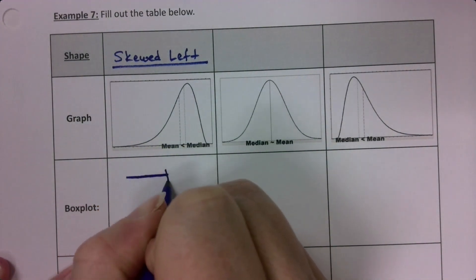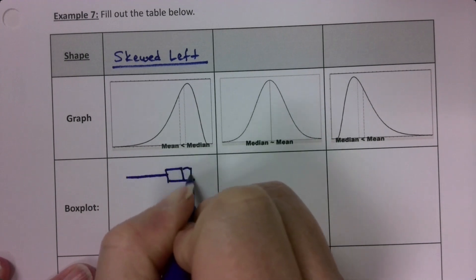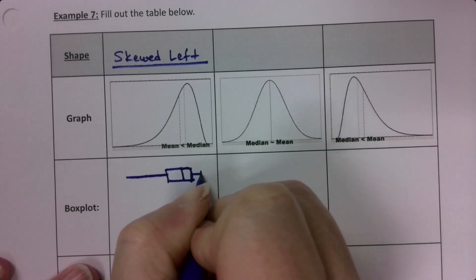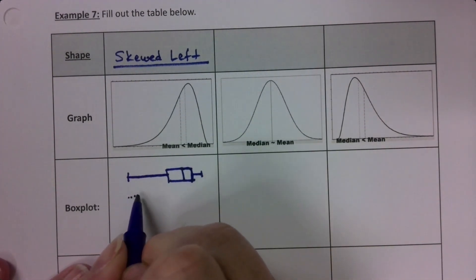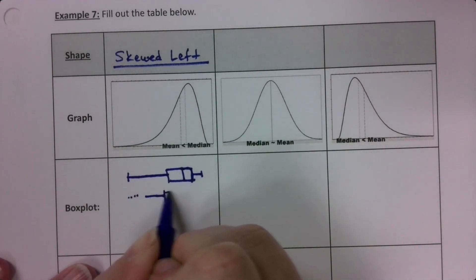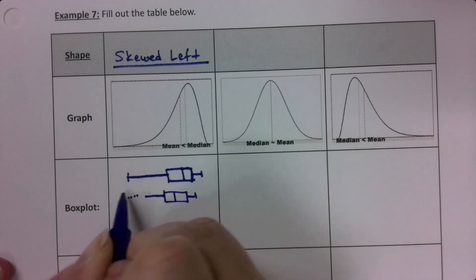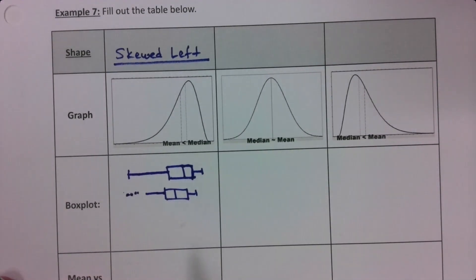As a box plot, it'll have a longer whisker on the left, or a longer box on the left, or both. Or it could have dot, dot, dot, dot, whisker, box, dot. But that still counts.